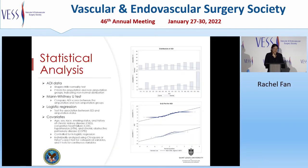To assess normality in the ADI data, we performed the Shapiro-Wilk normality test, which yielded a p-value less than .05, meaning the hypothesis of normality is rejected. Since the ADI data is not normally distributed, we performed the Mann-Whitney U test to compare ADI scores between the amputation and non-amputation groups. We performed logistic regression to test the association between socioeconomic status and amputation status after controlling for covariates including age, sex, race, smoking status, and history of chronic kidney disease, congestive heart failure, hypertension, and COPD. Covariates were analyzed using Chi-square or Fisher's exact tests for categorical variables and T-tests for continuous variables.